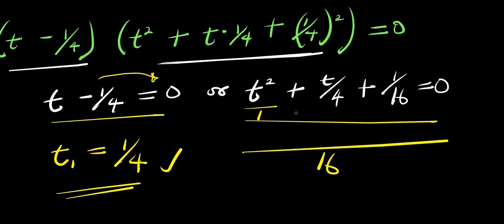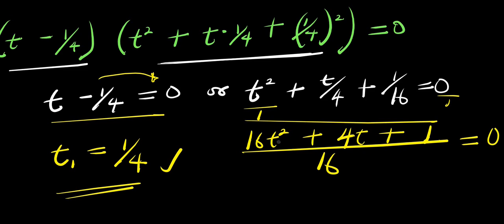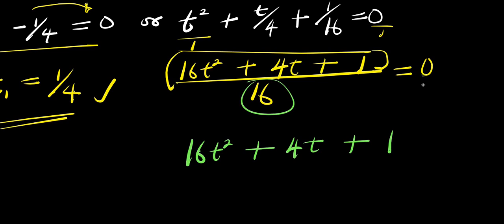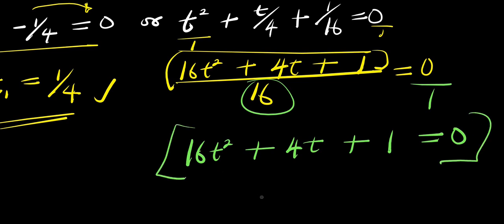For us to solve this I find the common LCM. The common LCM here is 16. I divide: 16 divided by 1 is 16, so 16 times t squared gives 16t². Then 16 divided by 4 is 4, so 4 times t gives 4t. Then 16 divided by 16 is 1, so 1 times 1 gives 1. This equals 0, so we have 16t² plus 4t plus 1 equals 0.